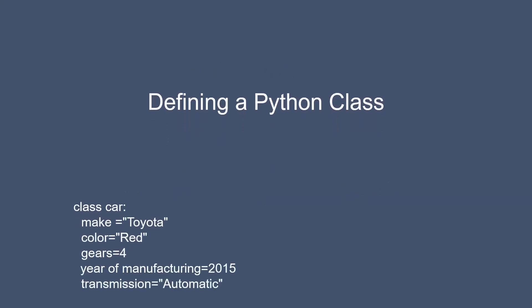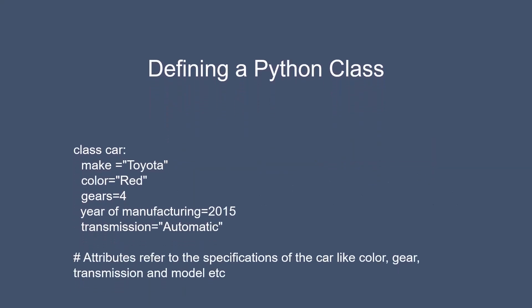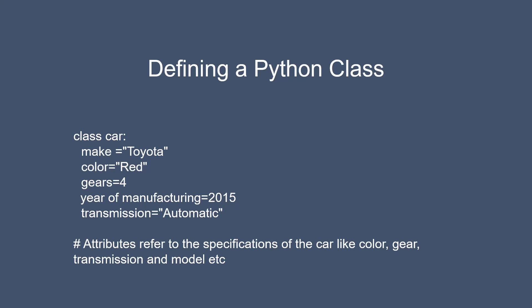A class can be created by the class keyword followed by the class name, and then we will set the attributes of that class. For example, if we create a class with the name of car, then we can set its attributes like car make, its color, its gears, year of manufacturing, and transmission. These attributes will be assigned to the objects created with this class.